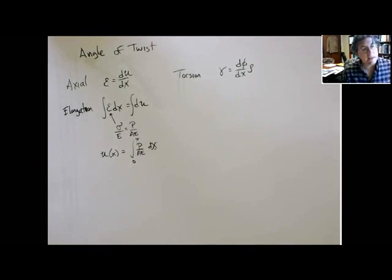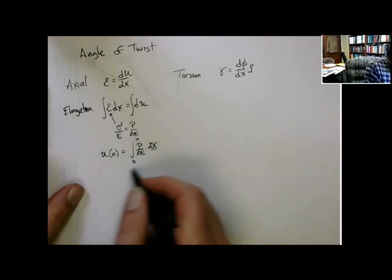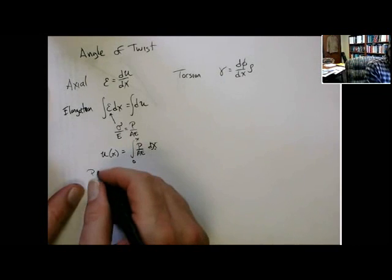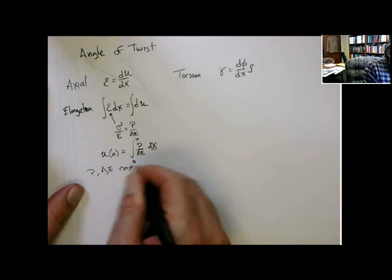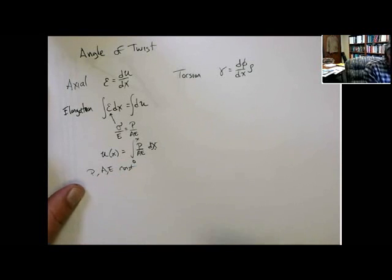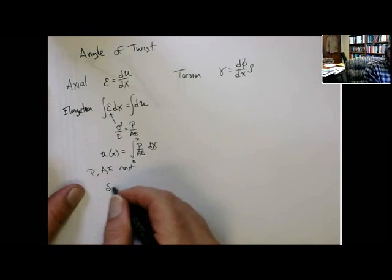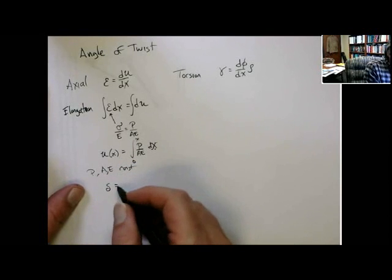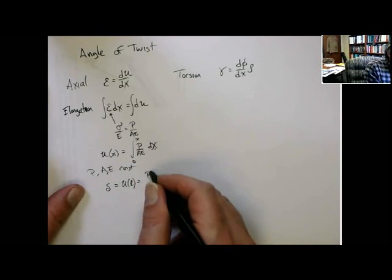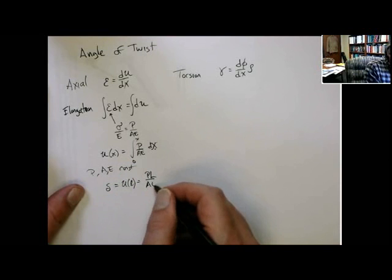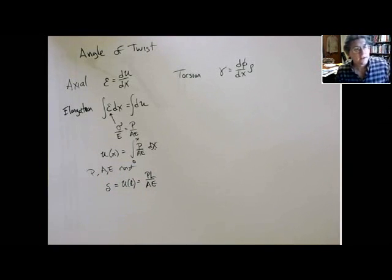So that gives you the deformation, the general integral. And we also talk about situations where E, A, which are constant during the length, which are pretty typical. And that's the amount of deformation, which is displacement in the axial direction. And you know, E, A, times displacement over x.